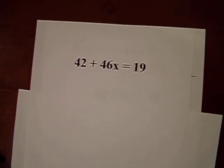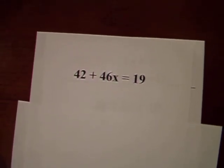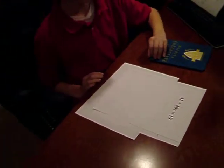42 plus 46x equals 19. And one question you might have is, can there be a variable on both sides? And yes, you can.